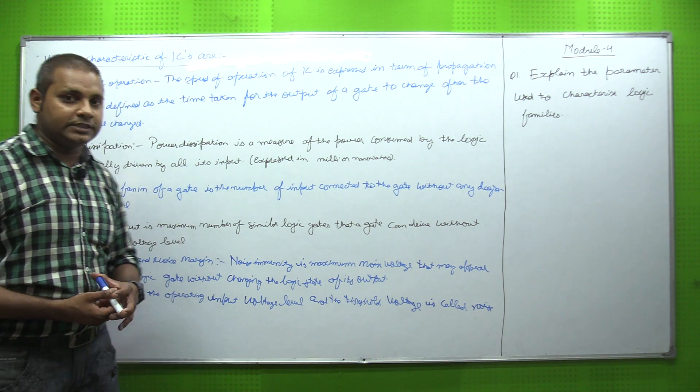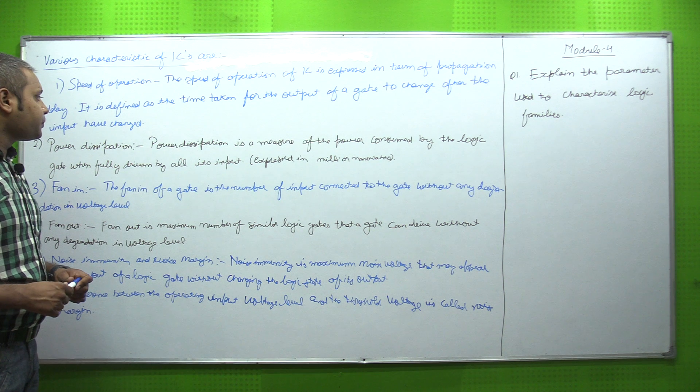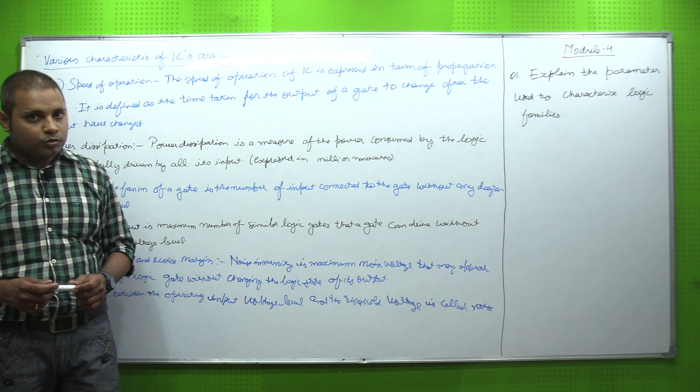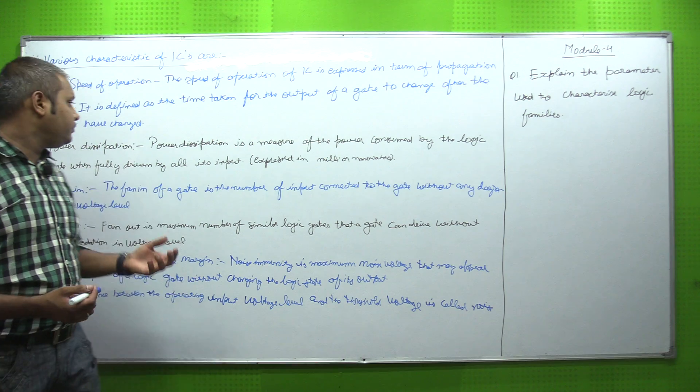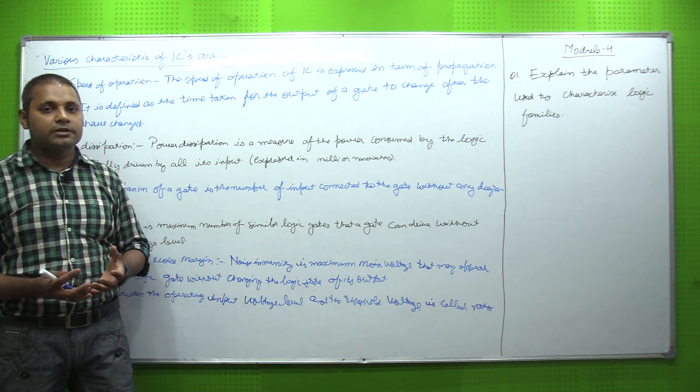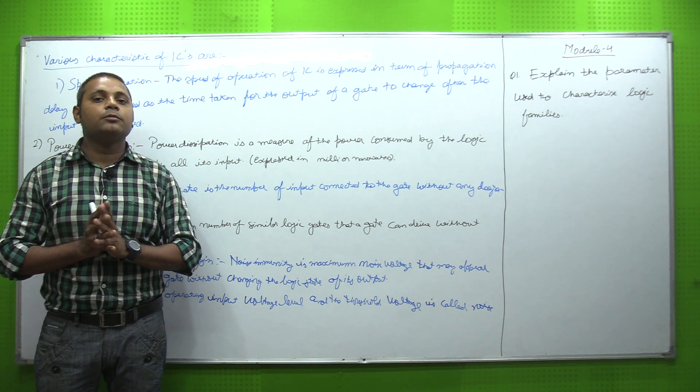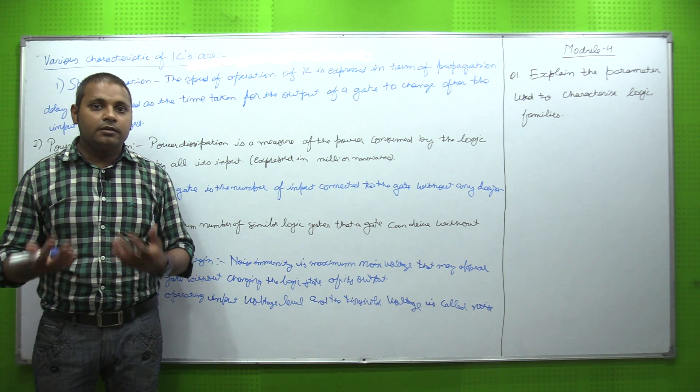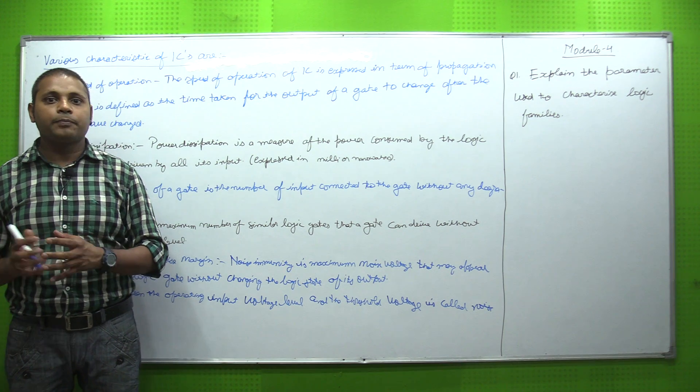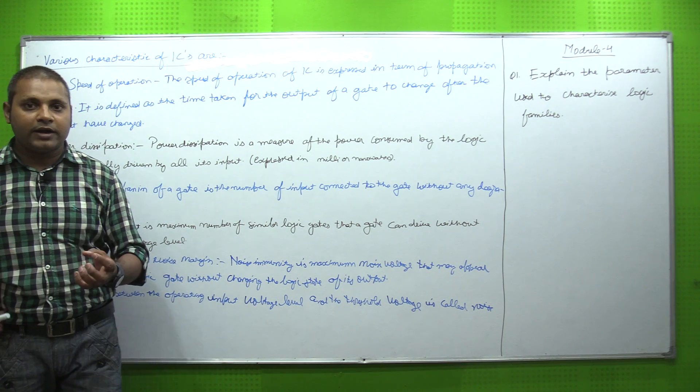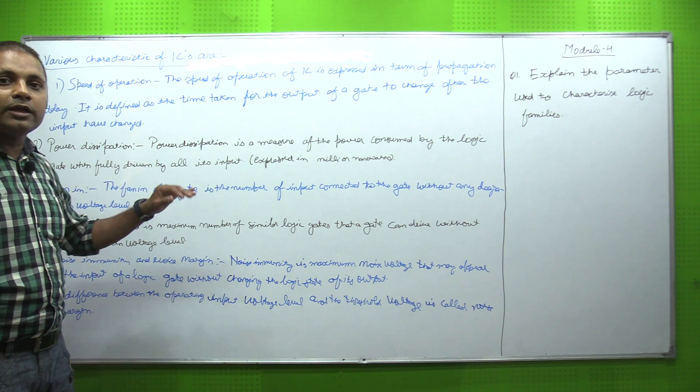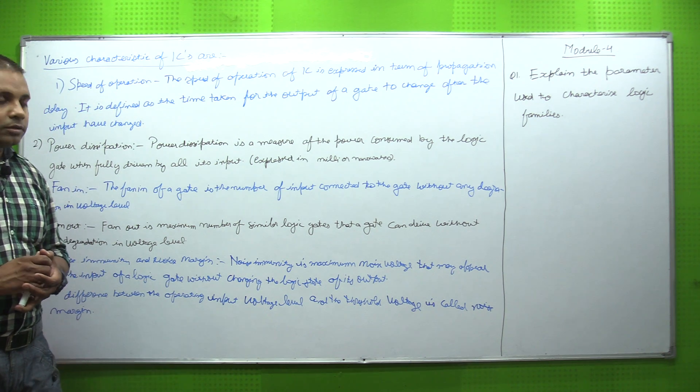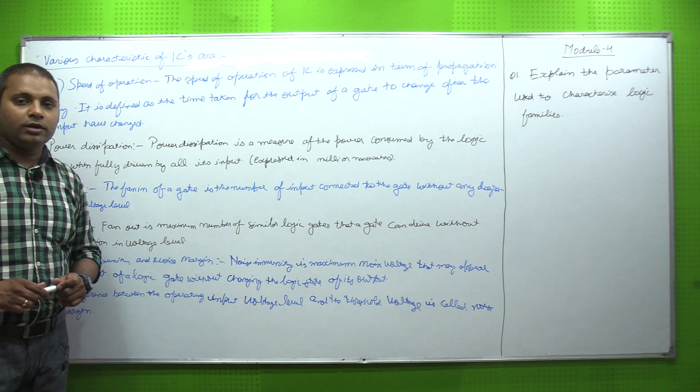Second characteristic is power dissipation. Power dissipation is the measure of power consumed by the logic gate when fully driven by all its inputs. For any system, when we provide power, how much output we get from that power is the power used, but some power will be dissipated or vanished - that factor is power dissipation. It is expressed in milliwatts or nanowatts, as the dissipation is very minimum.